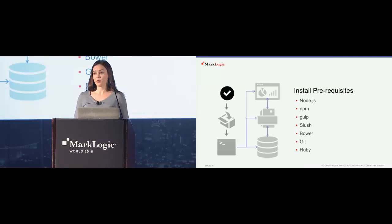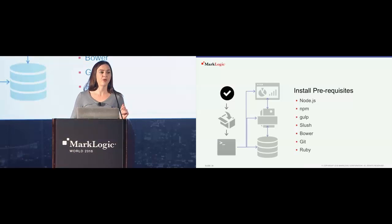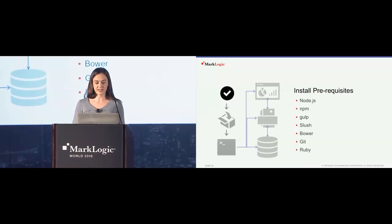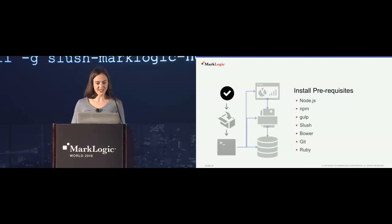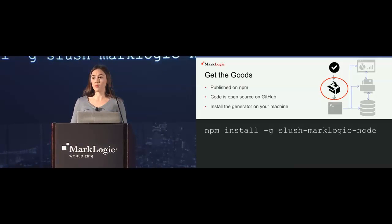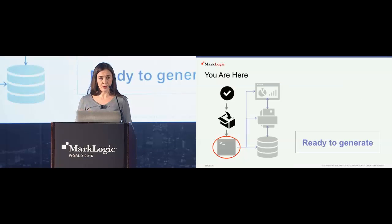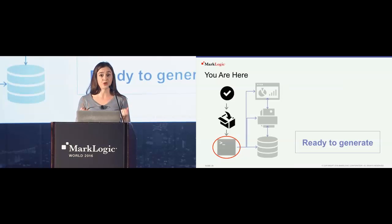First, install the prerequisites. Most of these can actually be installed with a single command, and they're all pretty common for JavaScript developers, at least as of 2016. The Slush generator is published on NPM, which is the package manager for the Node community. So you just run a single NPM command to actually get the generator. Once you've got the prerequisites and you've got the generator locally, you're ready to build your own project.